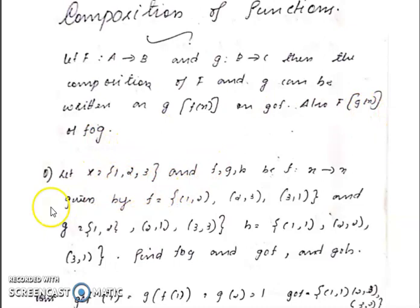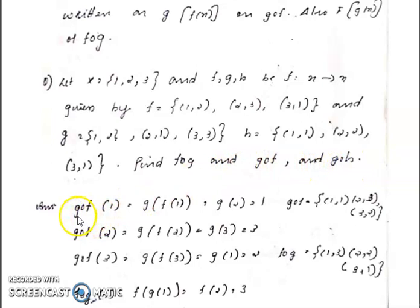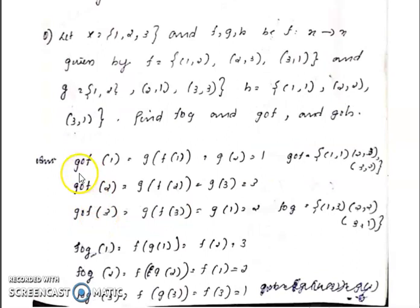We will work out a problem. Let X = {1, 2, 3} and functions F, G, H from X to X be given by F = {(1,2),(2,3),(3,1)}, G = {(1,2),(2,1),(3,3)}, and H = {(1,1),(2,2),(3,1)}. Find F∘G, G∘F, and G∘H. Let us find G∘F(1), G∘F(2), and G∘F(3).